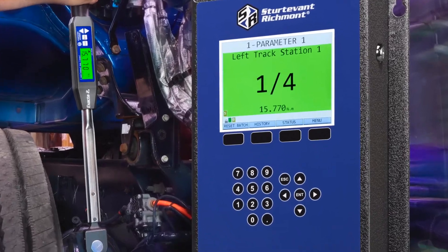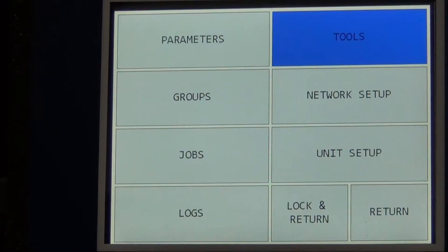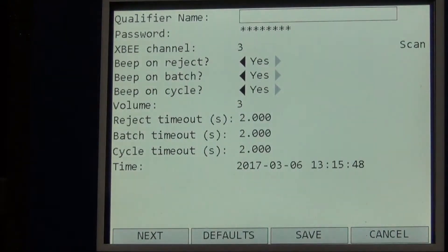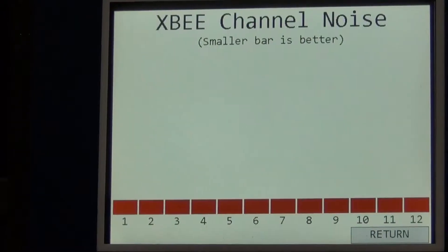Using the analyzer is simple. Use the arrow keys to scroll over to unit setup. Scroll down to the channel indicator. To the right of the channel indicator you'll see the word scan. Use the arrow to move the cursor to scan and then press enter.